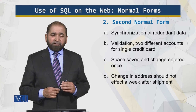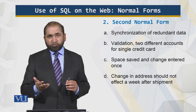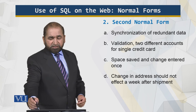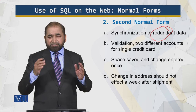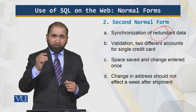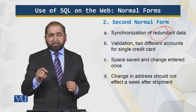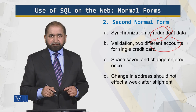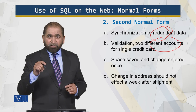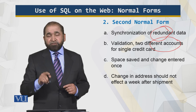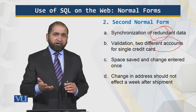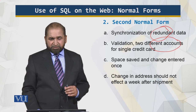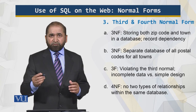Second Normal Form. Someone new to this domain might ask: why use two tables? The purpose is synchronization of redundant data. With a single table containing repeating data, any change must be made everywhere. If you don't apply the Second Normal Form, you may end up with two different account entries on a single credit card, which is wrong. We are not only saving space but also ensuring data is entered only once. Another benefit: if an item has been shipped and the address changes, you only update it in one place.